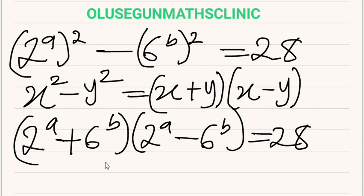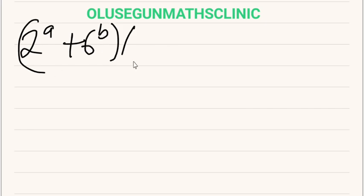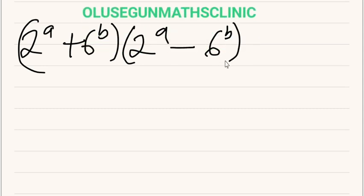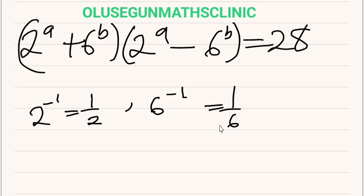There are two things to consider here. Nevertheless of the value of A, 2 raised to any power will surely be positive — for example, 2 raised to power minus 1 gives 1 over 2. The same thing applies to 6 raised to power B: 6 raised to power minus 1 gives 1 over 6, and 1 over 6 is a positive number.